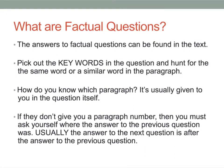What is a factual question? Basically, a factual question is a type of question where the answers can be directly found in the text and you don't have to try to twist it too much. So what you do is you look at the question and then you pick out the key words in the question. That is very important because sometimes your papers are a little bit too clean — you have to be underlining the key words in the question so that you know what to look out for. After that, you hunt for the same word or a similar word in the paragraph, and that is usually where your answer should lie.